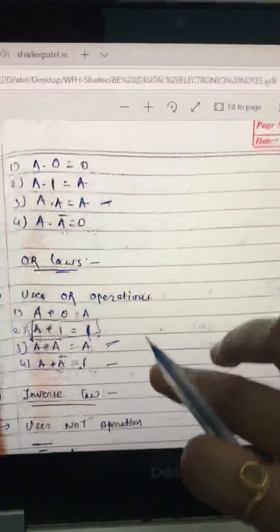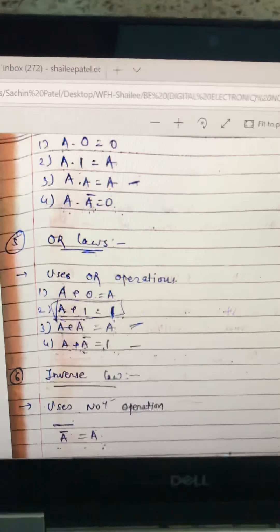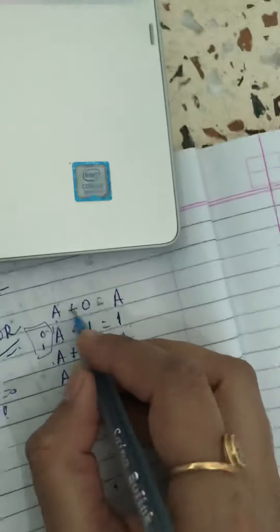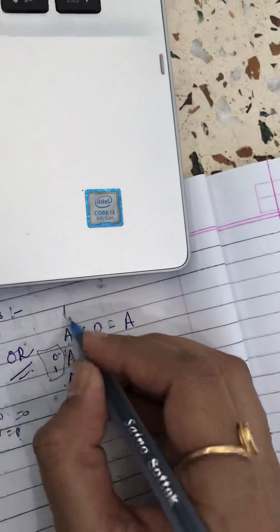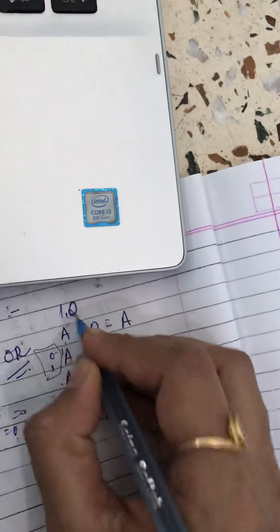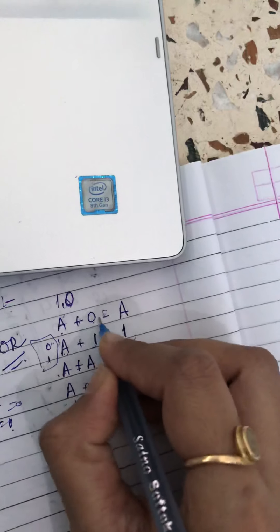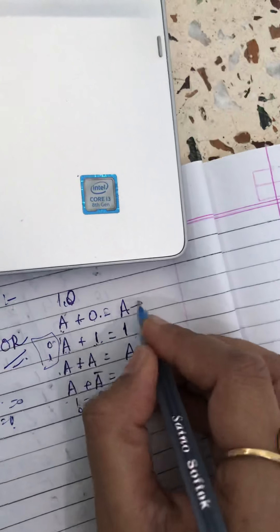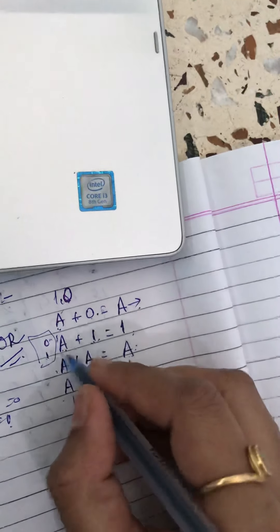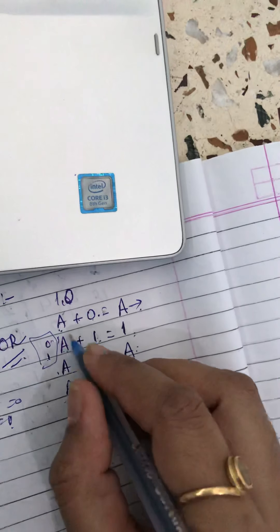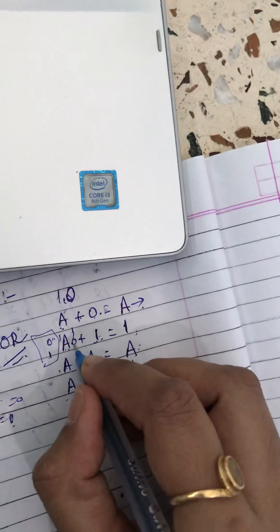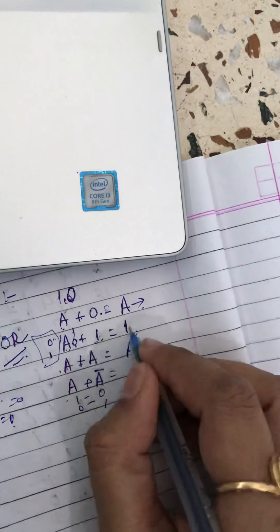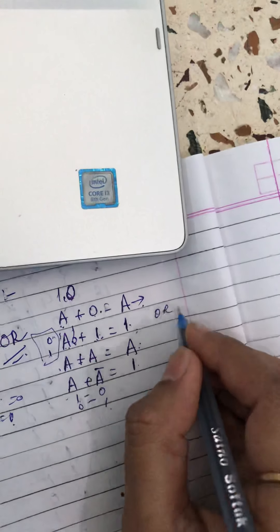Now let's go for the OR laws. Those are the same: zero, one, A, and A bar. A plus zero: A will be either one or zero. The addition of any number with zero gives you the same number. For addition with one, if it is one or zero, you will definitely get one.